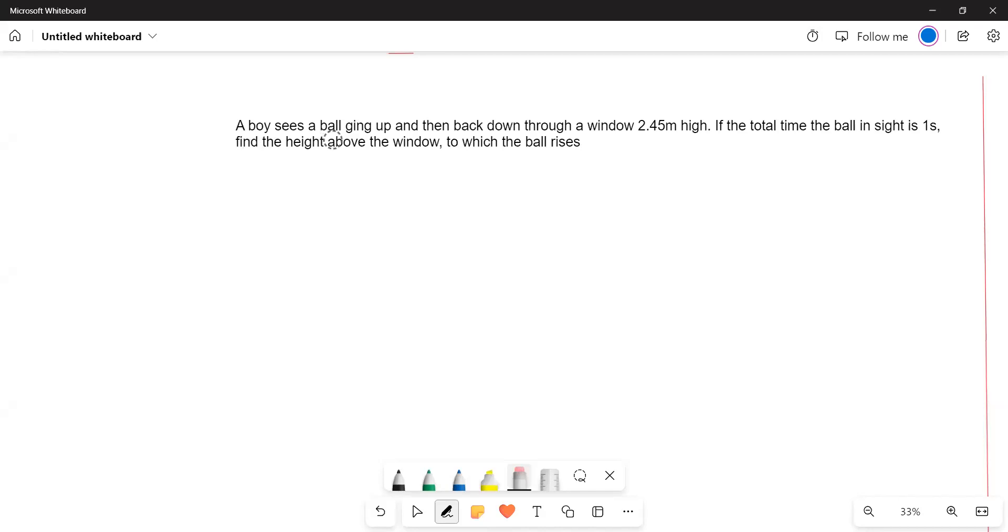A boy sees a ball going up and then back down through a window 2.45 meters high. If the total time the ball in sight is 1 second, find the height above the window to which the ball rises.